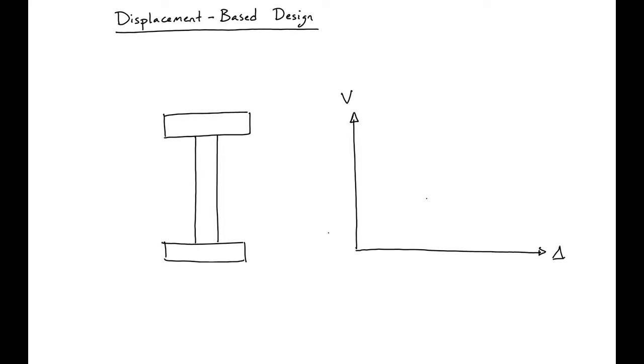Displacement based design is a design procedure where the limit state that we're concerned with is displacement. So we limit and design based on the displacement of our structure.